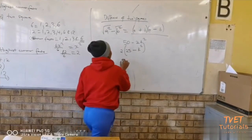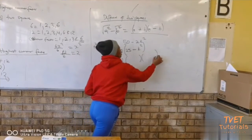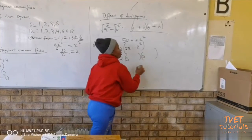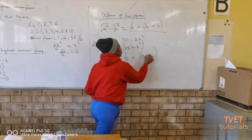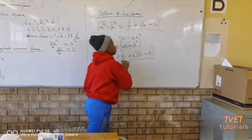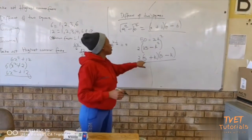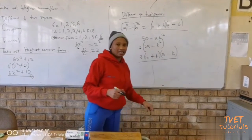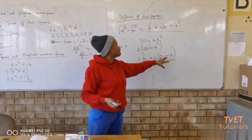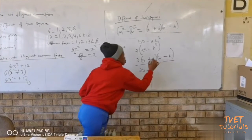Now we factorize what is inside the bracket. We bring down the 2 since it is the highest common factor, and open two brackets. The square root of 25 is 5, so we put 5 and 5, one positive and one negative. The square root of k squared is k and k. The final answer is 2 into 5 plus k, multiplied by 5 minus k. It's not just 5 plus k into 5 minus k, because 2 is a common factor — that would imply the expression was 25 minus k squared without the factor of 2.